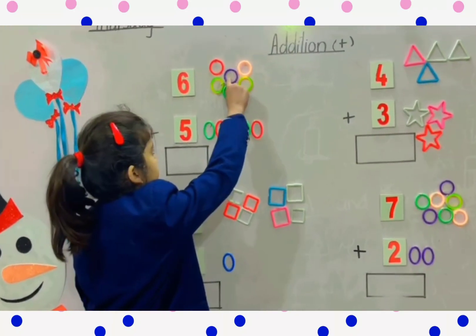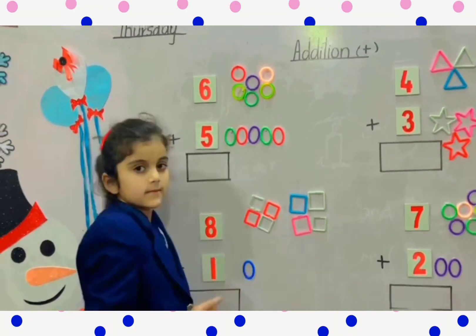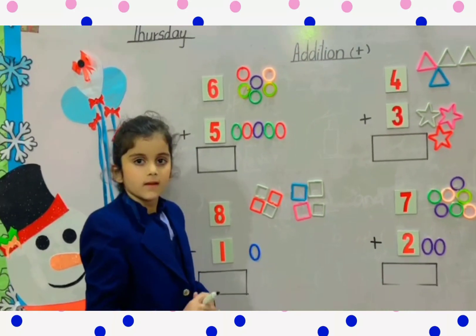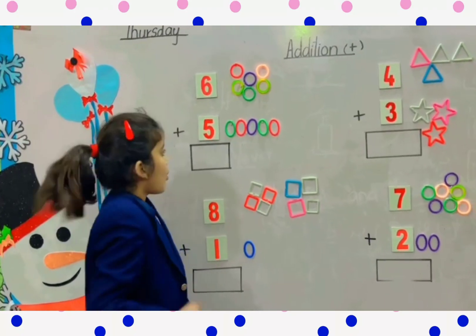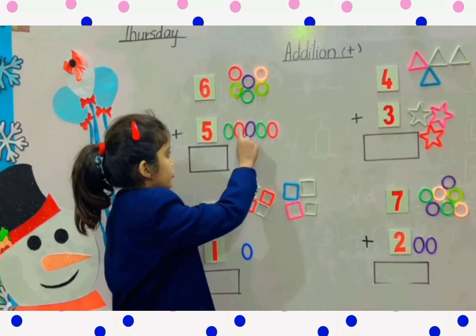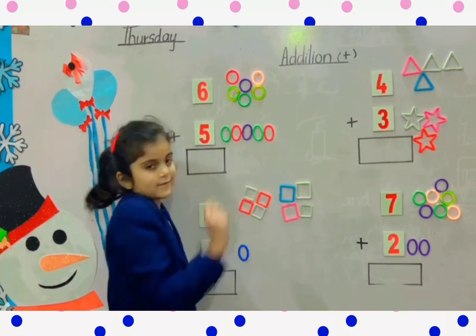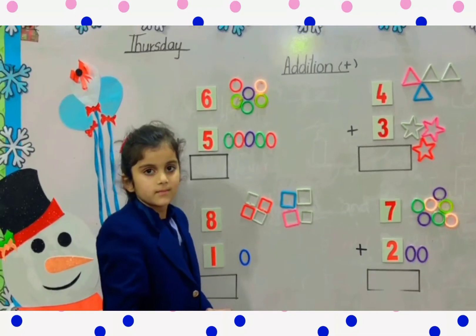One, two, three, four, five, six. Six circles. Very good. Now count the oval shapes. How many oval shapes? One, two, three, four, five. Five oval shapes.